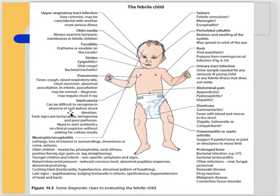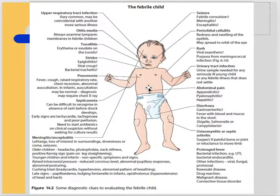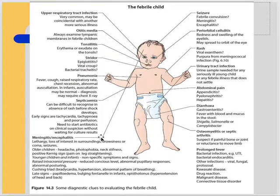Septicemia can present with fever and can be difficult to recognize in the absence of a rash before shock develops. Early signs include tachycardia, tachypnea, and poor perfusion. Start antibiotics on clinical suspicion without waiting for culture results.